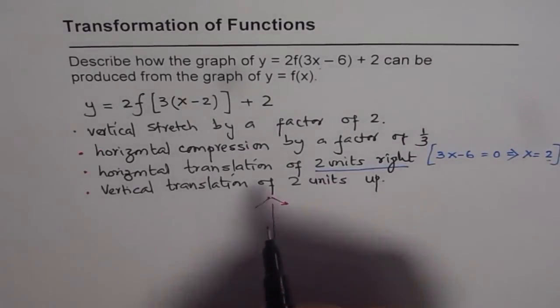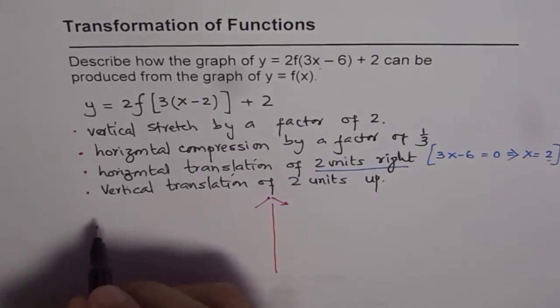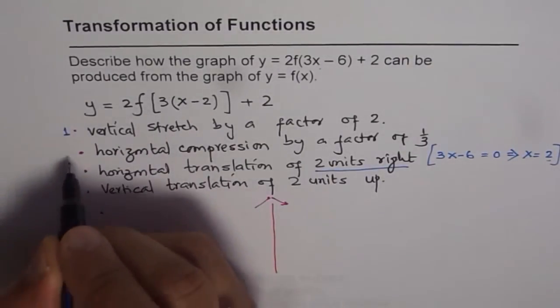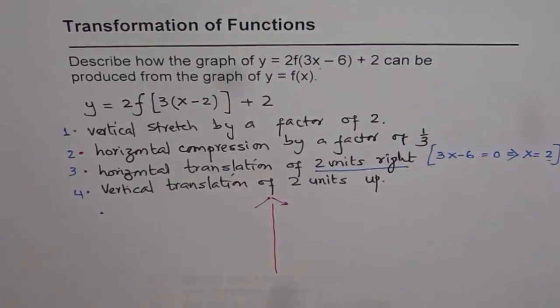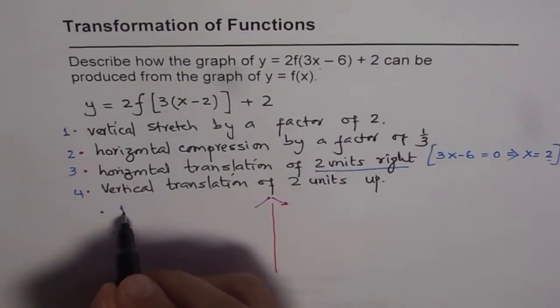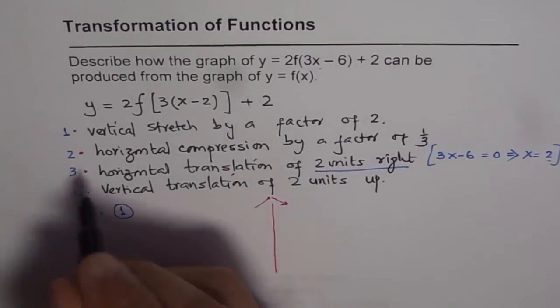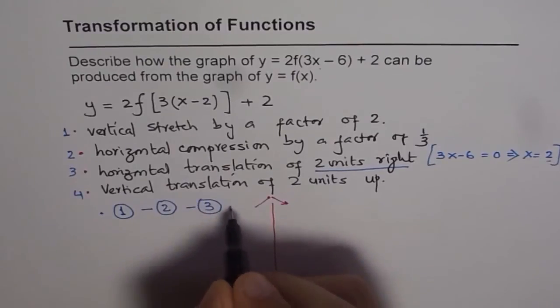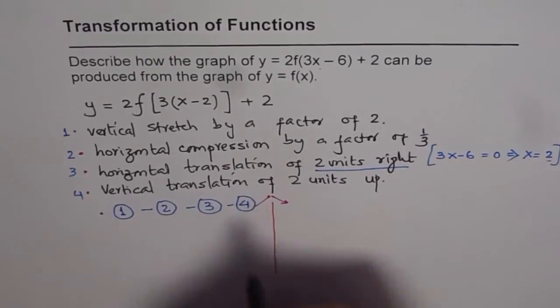So first method I will say is, let's go as such, which is step number 1. Let's say, this is our step number 1. This is 1, 2, 3, and 4. Let's say these are the four transformations. So first, we can do step number 1, and then we do step number 2, and then we do step number 3, and then we do step number 4. This is the first method.